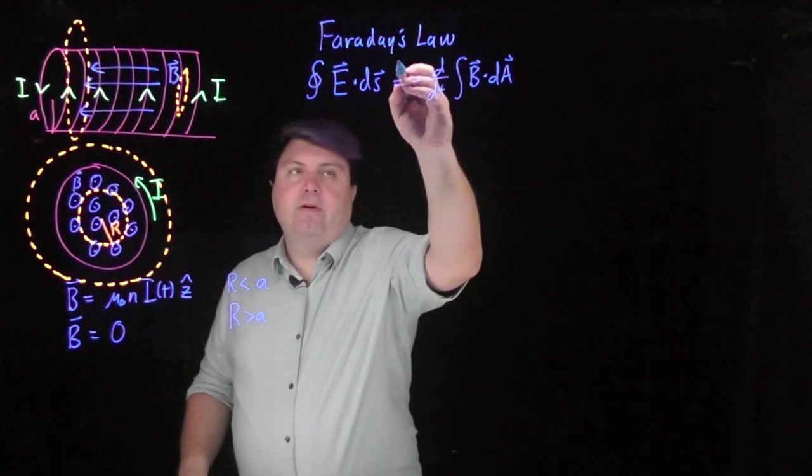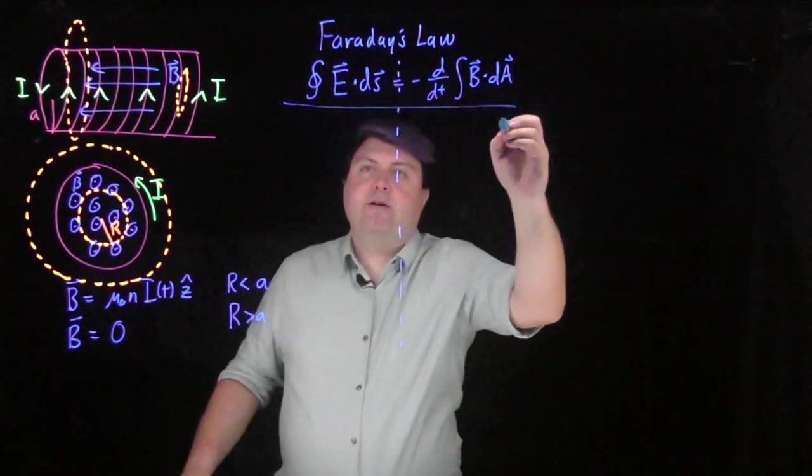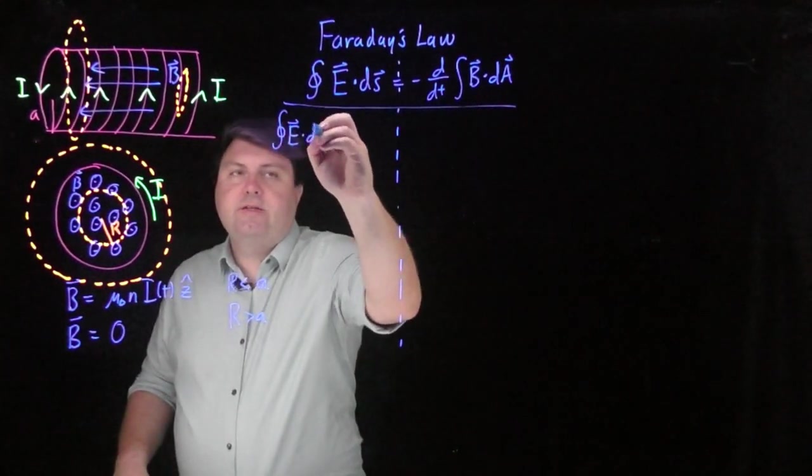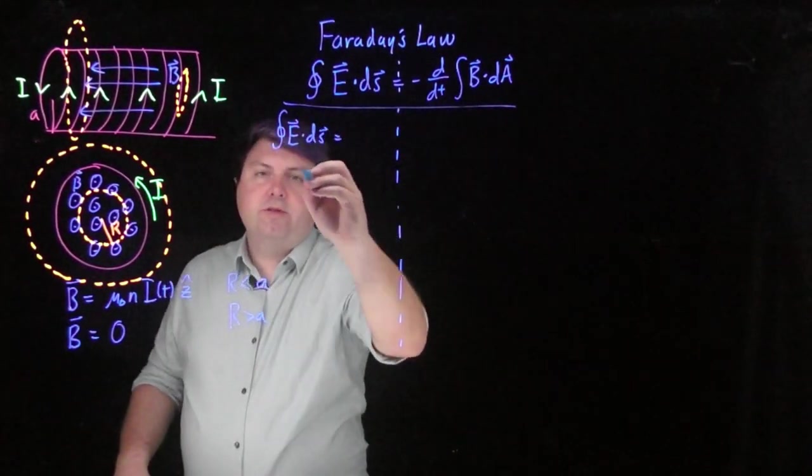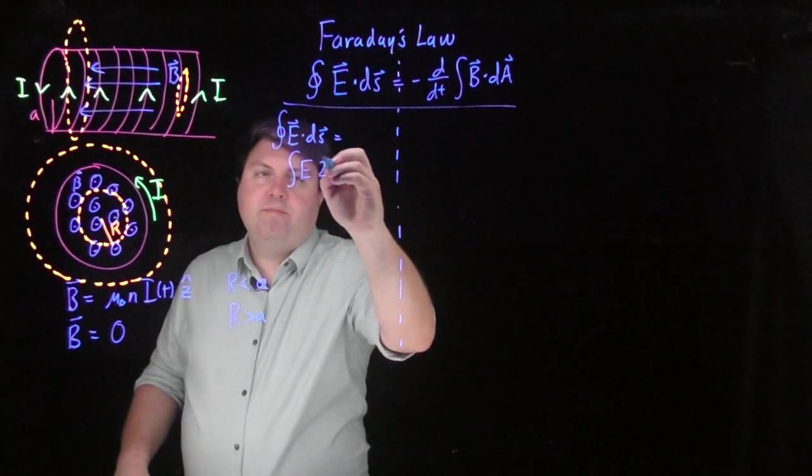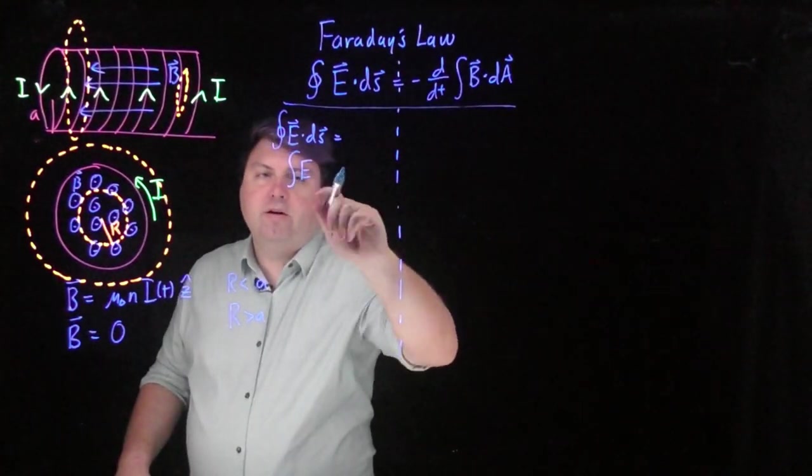So in this case, our closed integral of E dot ds for this loop is just the integral of E times the ds of this, which is going to be r d theta.